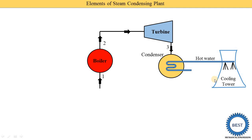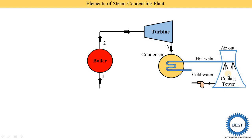In this cooling tower, some space is provided for the air. Air is sucked from the bottom part of the cooling tower and passed through the water. The temperature of the water is reduced and air exits from the top part of the cooling tower. This cold water collected in the cooling tower is again supplied into the condenser.